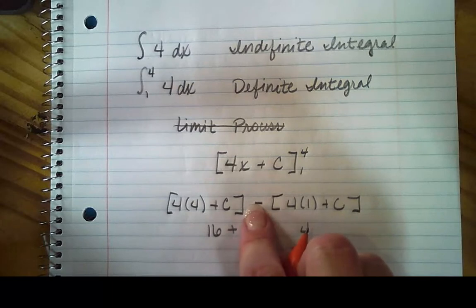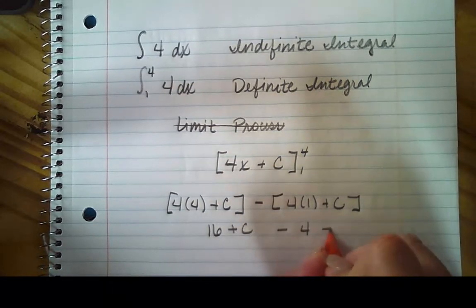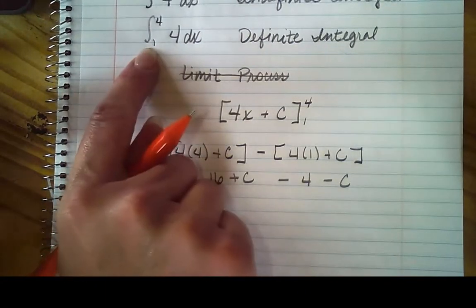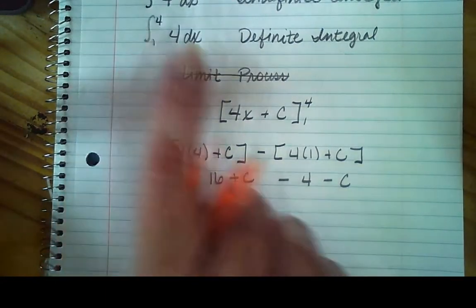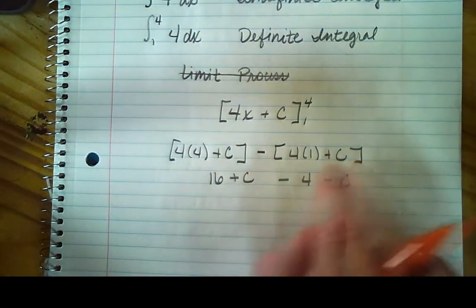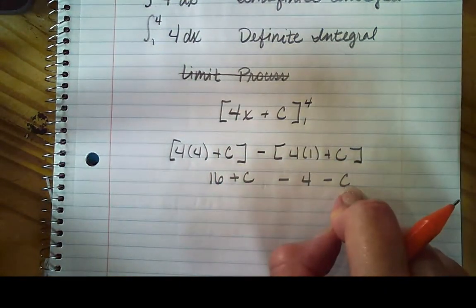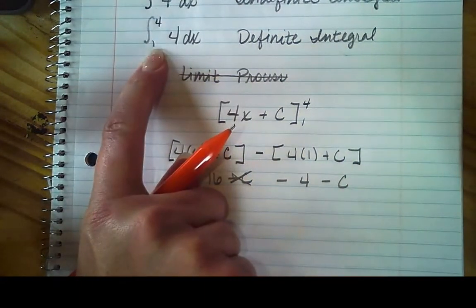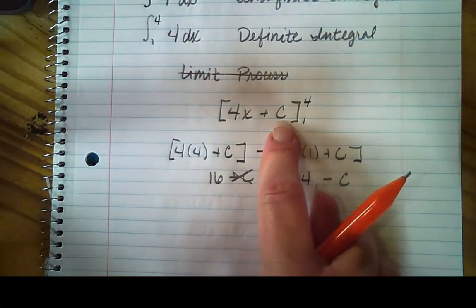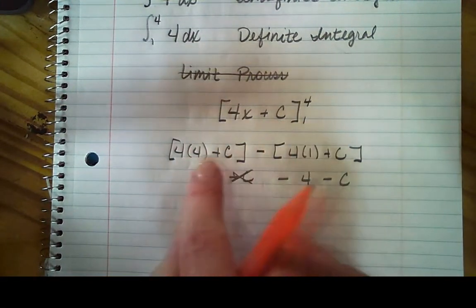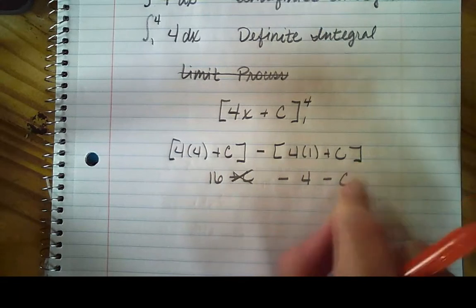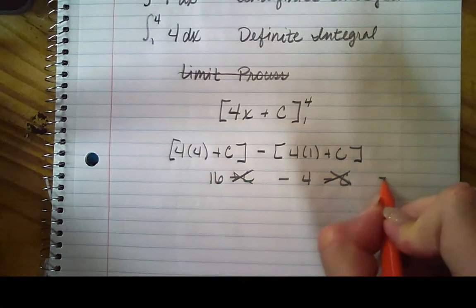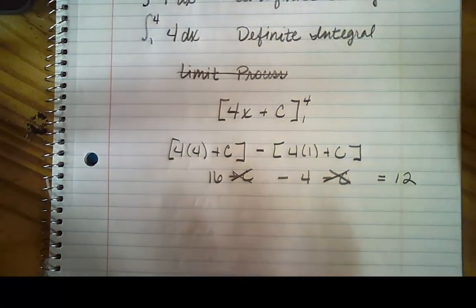But remember, you're going to distribute this negative. So that becomes minus 4, minus c. So here's the fun part. When we are doing definite integrals, we don't have to do the plus c's. Why? Because they're going to fall off every time. So from now on, with definite integrals, it's understood that the plus c is there. But it's also understood during the process of evaluation that they're going to cancel each other out. So now my answer is 16 minus 4 is 12. So you just found the area under the curve.